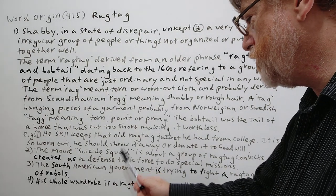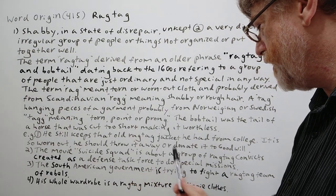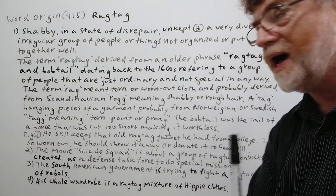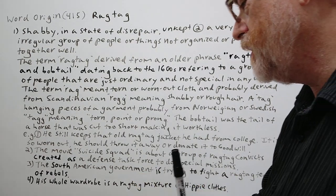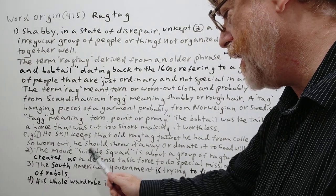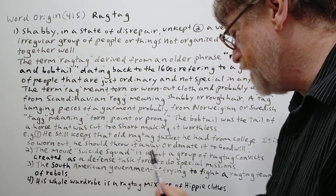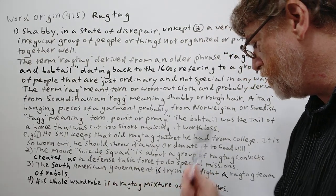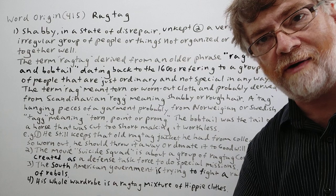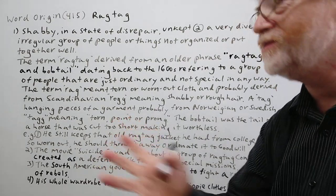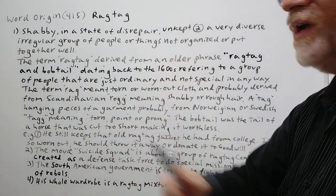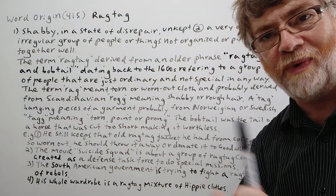Number two: the movie Suicide Squad is about a group of ragtag convicts created as a defense task force to do special missions — put together in a kind of unorganized way.